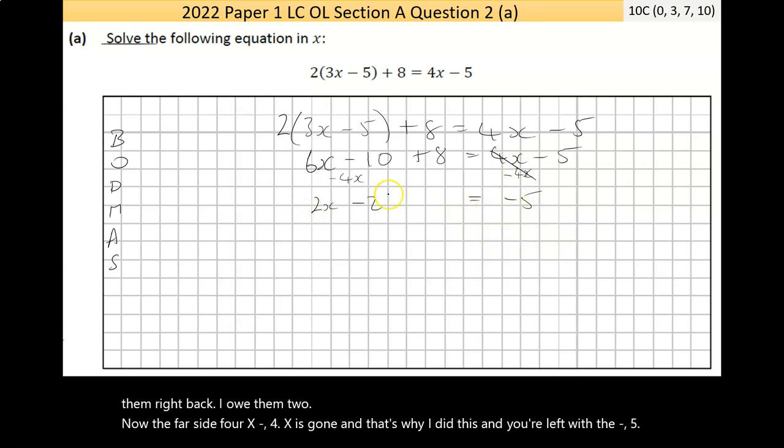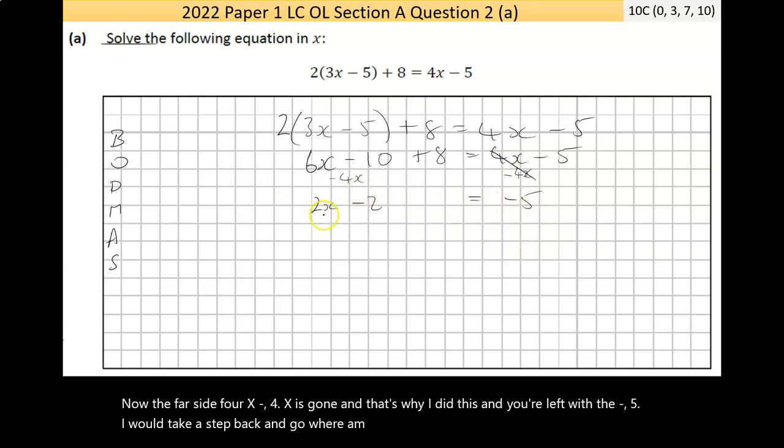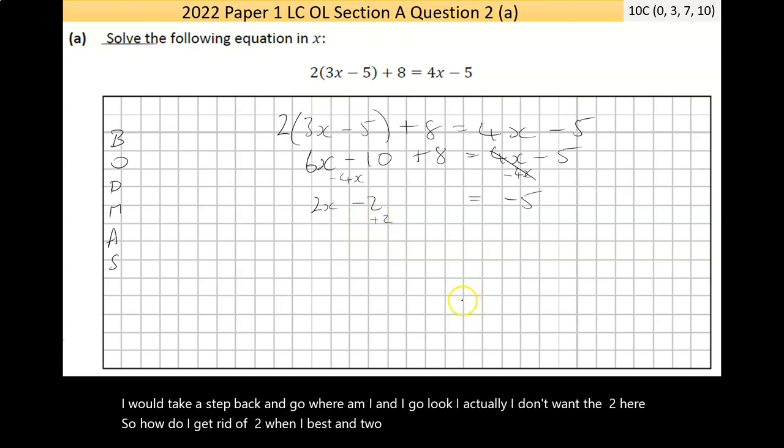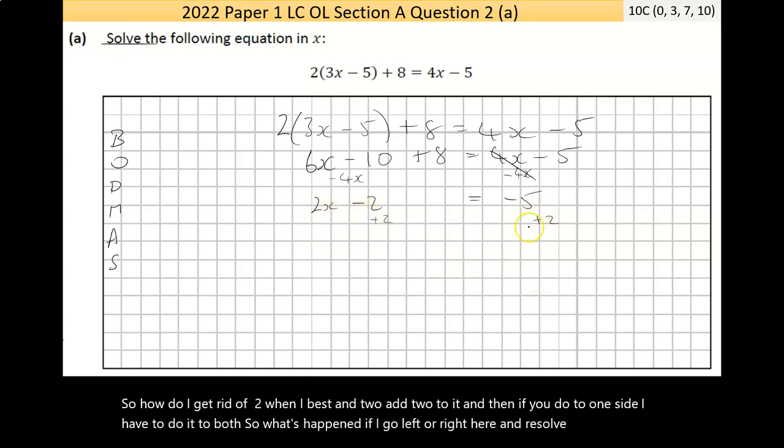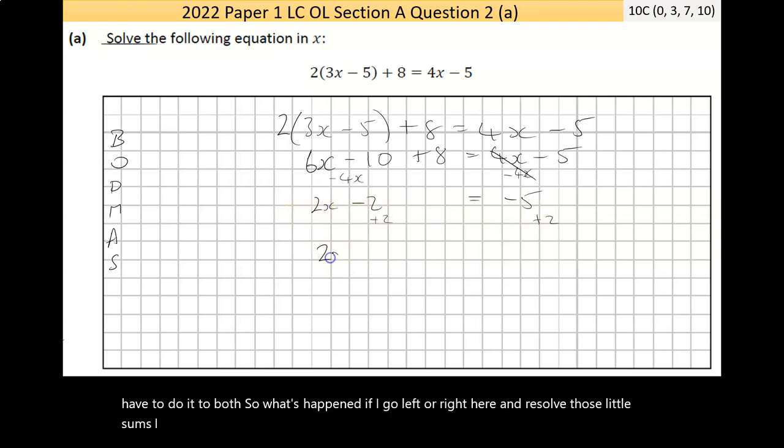I would take a step back and go, where am I? Actually, I don't want the negative 2 here. So how do I get rid of negative 2? Well, best thing I do is add 2 to it. And then if I do it to one side, I have to do it to both. So what's happened? If I go left to right here and resolve those little sums I created, 2x doesn't change. Minus 2 plus 2 is 0. That's why I did that. Minus 5 plus 2 is minus 3.